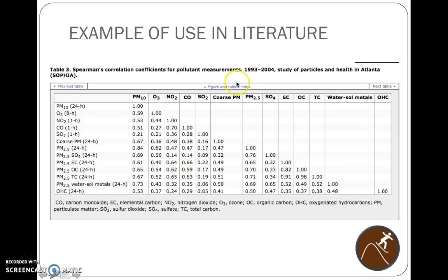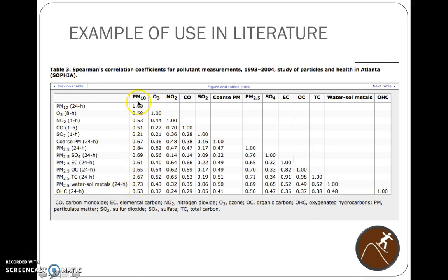Here are more Spearman correlation coefficients from a study of particles and health in Atlanta — the SOFIA study. They were comparing PM10, which is obviously perfectly correlated with itself, but PM10 and ozone show a correlation of 0.59. It doesn't show here which ones are statistically significant — maybe they all are. You can see carbon monoxide and nitrogen dioxide have a correlation of 0.70, and PM2.5 water solids and PM10 have a strong correlation of 0.73.